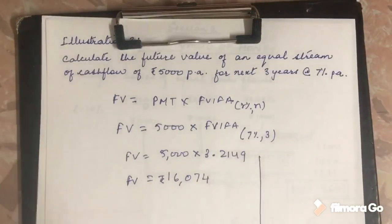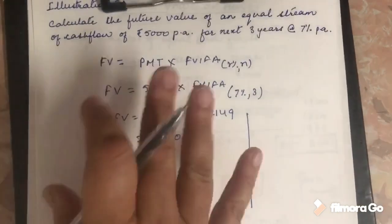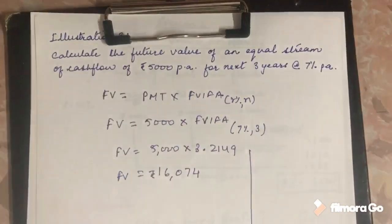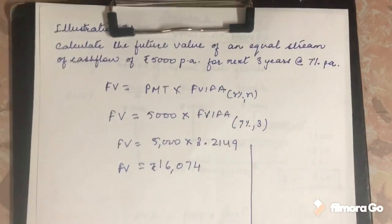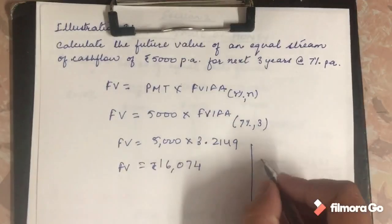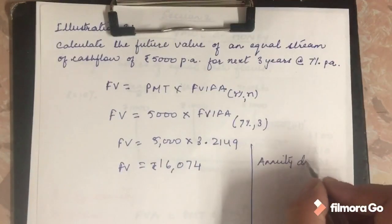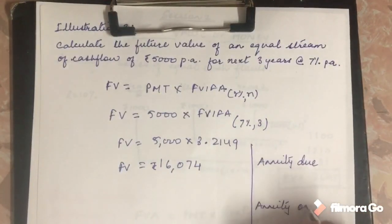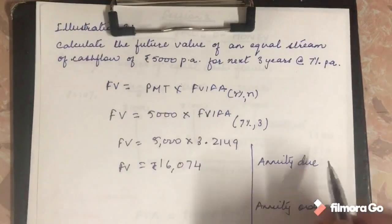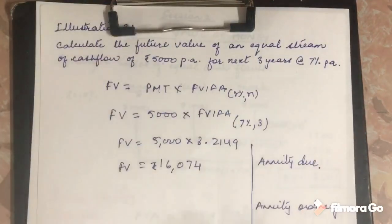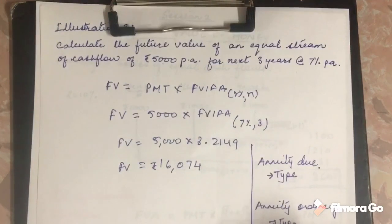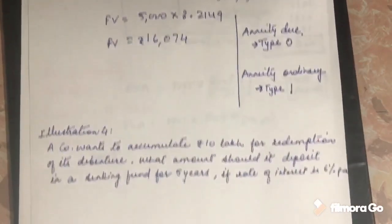At this point, I want to clarify one more concept. In this question we assumed that the ₹5000 is invested at the beginning of the year — year zero. In that case the annuity type changes. We have two types of annuity: annuity ordinary (or annuity immediate), where the first installment starts at the end of the year, and annuity due, where it starts at the beginning. In Excel, the 'type' option is related to this distinction — type = 0 for ordinary, type = 1 for annuity due. I will show this in Excel as well.